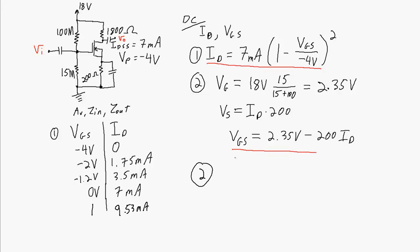For my second equation, which is just a straight line, I pick a couple of points. Two points is all I need. If I pick an ID of zero, I get a VGS of 2.35 volts. And if I plug in zero for VGS, then I get an ID of 11.75 milliamps.